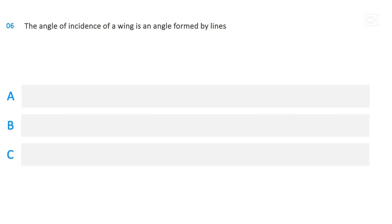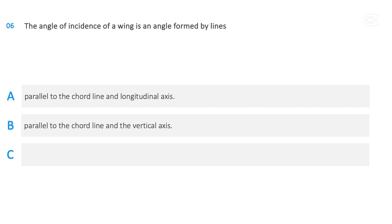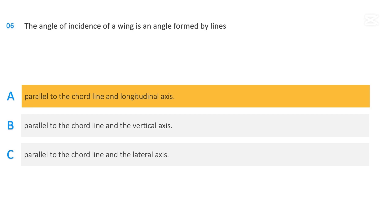The angle of incidence of a wing is an angle formed by lines: parallel to the chord line and longitudinal axis; parallel to the chord line and the vertical axis; or parallel to the chord line and the lateral axis. The correct answer is parallel to the chord line and longitudinal axis.